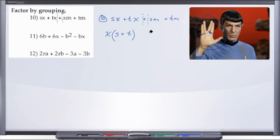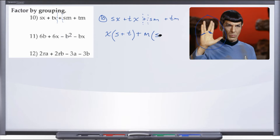Now let's deal with the right side. The reason I like isolating my sign is because whatever this sign is, it just comes down, so you don't have to worry about what sign to pull out of the right-hand side. Just bring down whatever sign is in the middle separating left from right. Now, what's in common on the right-hand side? M is in common. So we take out an M. M times what gives us SM? M times S. And M times what gives us TM? M times T, giving us plus T.